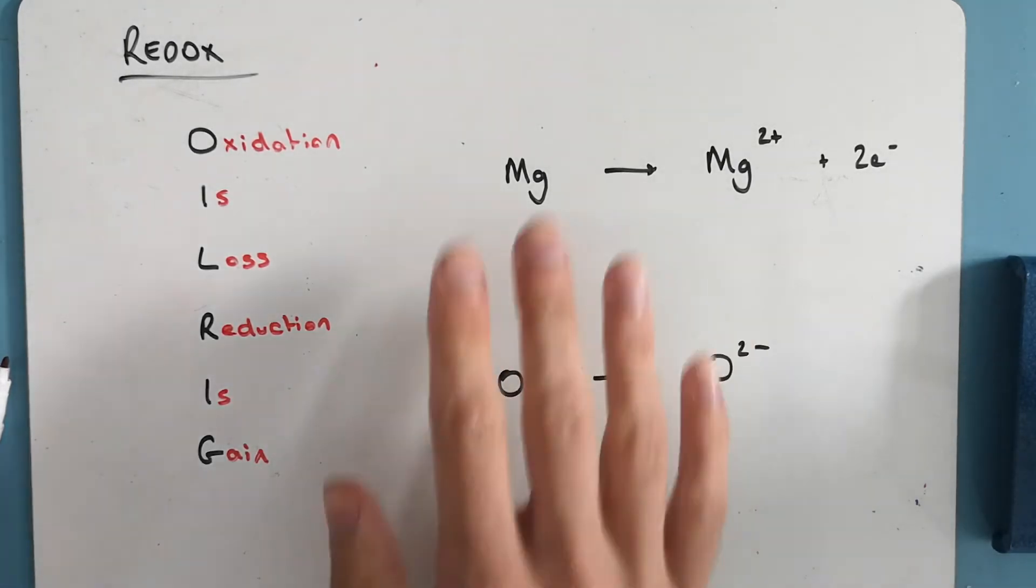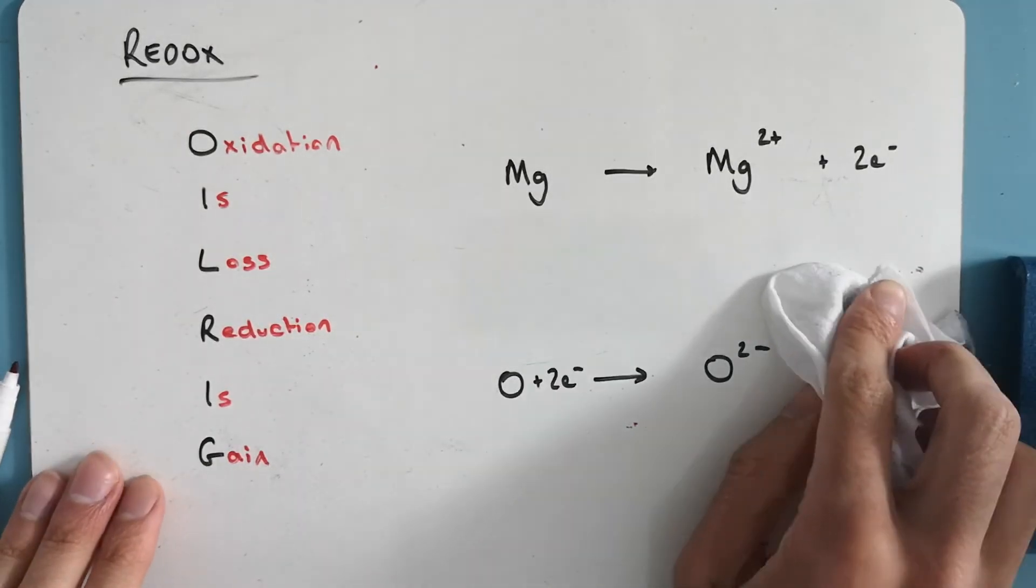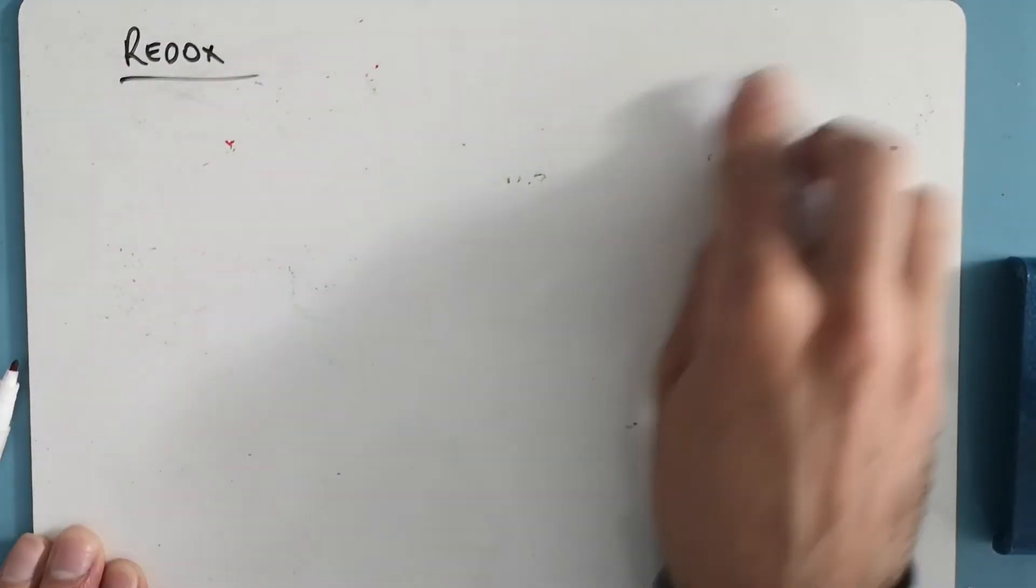So OILRIG. Reduction will be, let's say we took an oxygen atom. It gains two electrons. So oxygen plus two electrons goes to O^2-. Gaining electrons means that this is reduction. And so these are just little half equations. We can actually combine these and show you a redox reaction. We'll look at some examples of redox reactions.